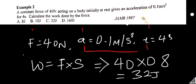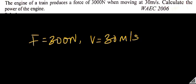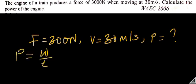The next question: the engine of a train produces a force of 3000 newtons when moving at 30 meters per second. Calculate the power of the engine. Remember from our formula that power is equal to work over time. The same power is also equal to force times velocity.